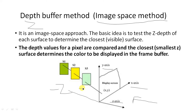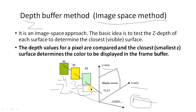Suppose the Z values of these surfaces are minus 2, minus 3, and minus 4. The nearest value from our viewing position is minus 2 — that is surface S1. The remaining surfaces S2 and S3 are hidden surfaces. On the basis of depth, we can identify which surface is visible and which is not visible.